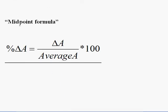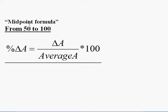So instead we use what's called the midpoint formula for percentage changes. The formula is: percent change in A = (change in A) / (average of A between the two numbers) × 100. In some ways it's simpler to calculate.